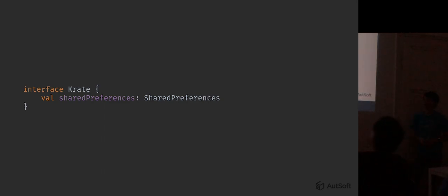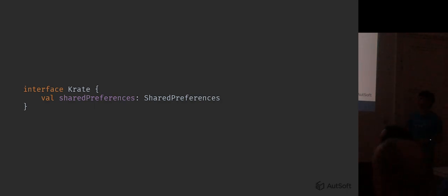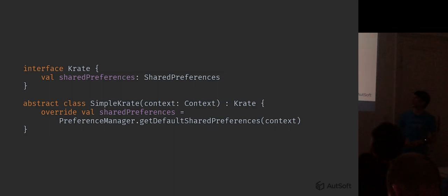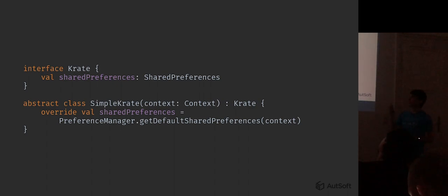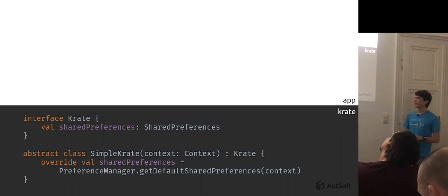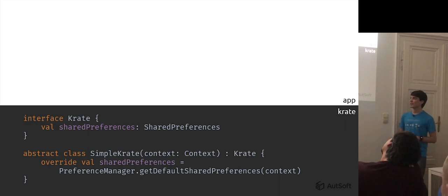Crate at the code level is just an interface, and anything can be a Crate as long as it has a shared preferences property in it. We do provide an abstract base class that makes it easier to implement this interface. This base class requires you to pass in a context — which is easy to come by on Android — and it implements the interface, overriding the single required property and fetching a shared preferences instance using the context it has received.